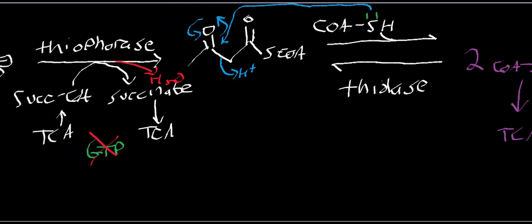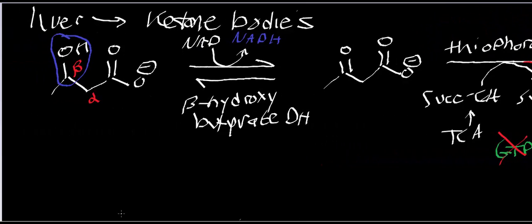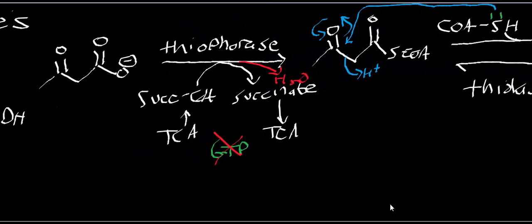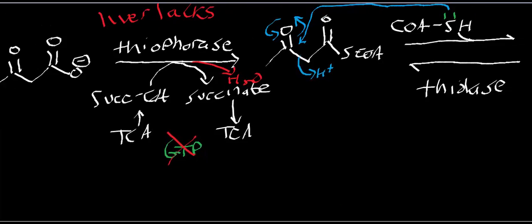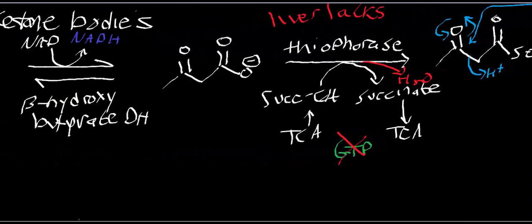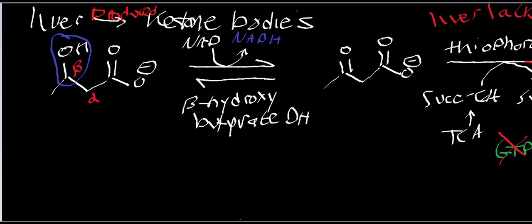This catabolic pathway — catabolizing ketone bodies — is done by just about every single tissue except for the liver. The liver is what produced the ketone bodies. The reason the liver cannot catabolize them is because it lacks thiophorase, or beta-ketoacyl-CoA transferase. Without this enzyme, the liver cannot convert acetoacetate to acetyl-CoA. So the liver makes ketone bodies but cannot consume them. All other extrahepatic tissues are what consume the ketone bodies.